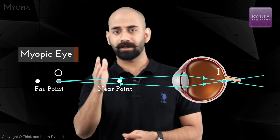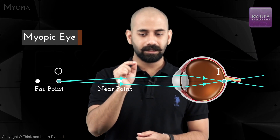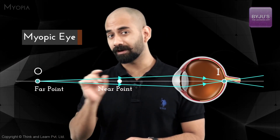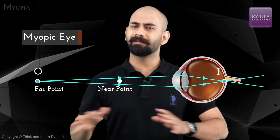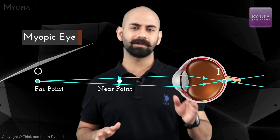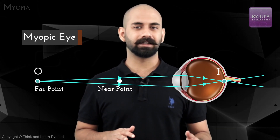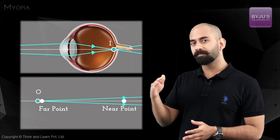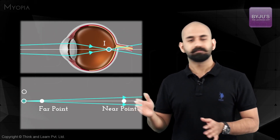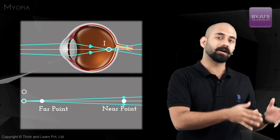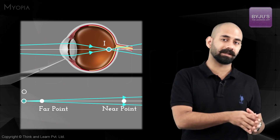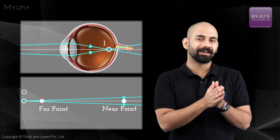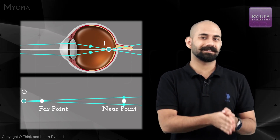Focusing on the myopic eye: as the object moves outward, until it reaches the far point the image will always be formed at the retina. But once the object goes beyond the far point, the image will no longer be formed on the retina, because at that point the crystalline lens is already at its maximum focal length.